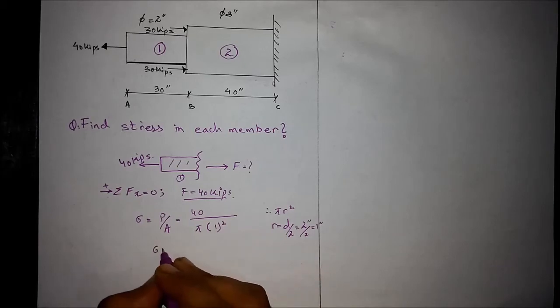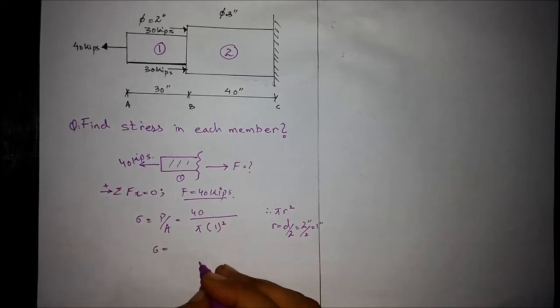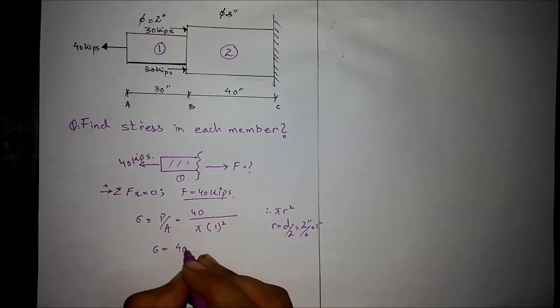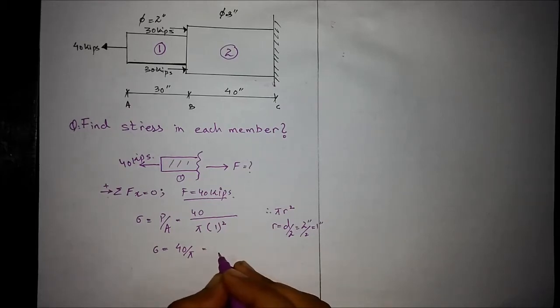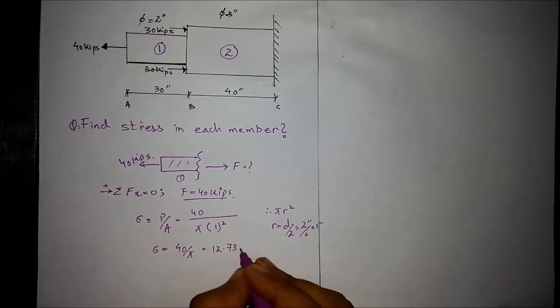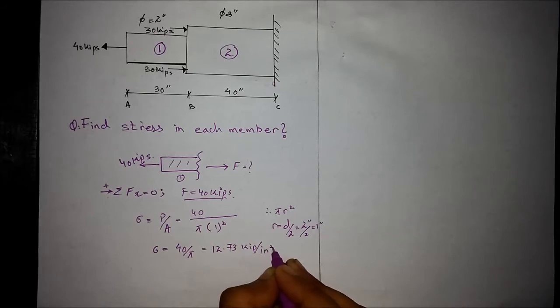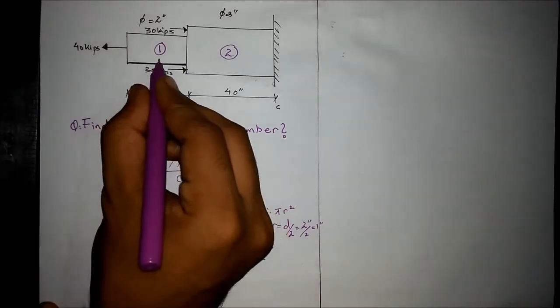The stress comes out to be 12.73 kips per square inch. That is the required answer for member number 1.